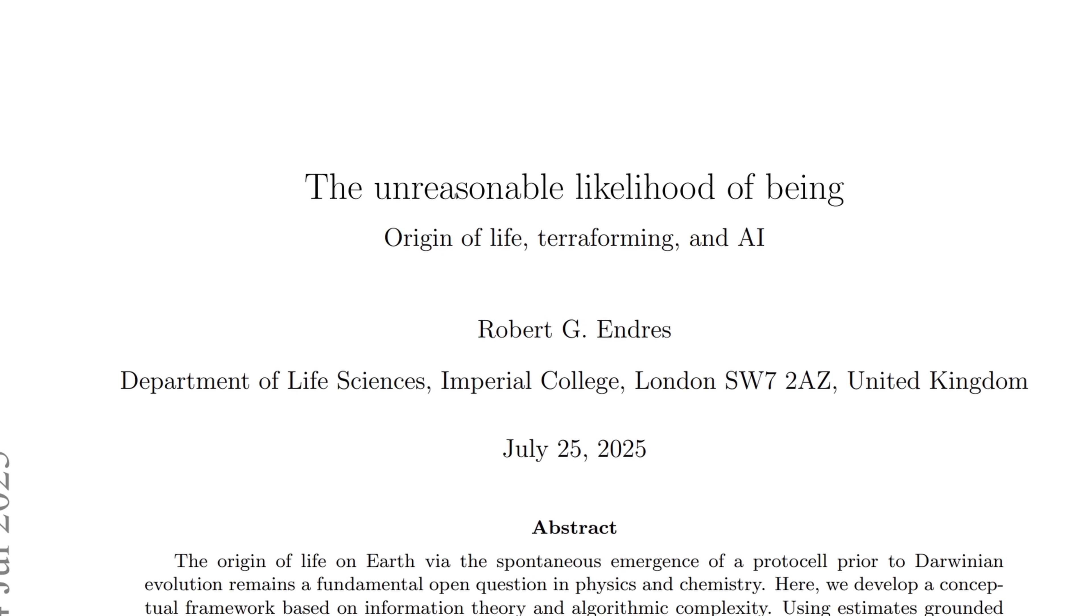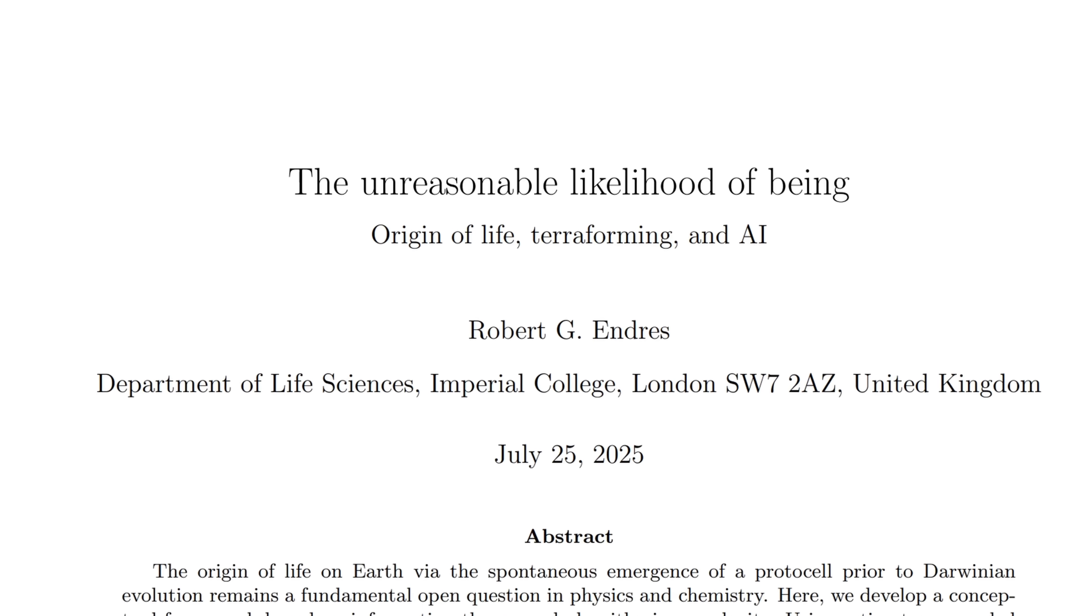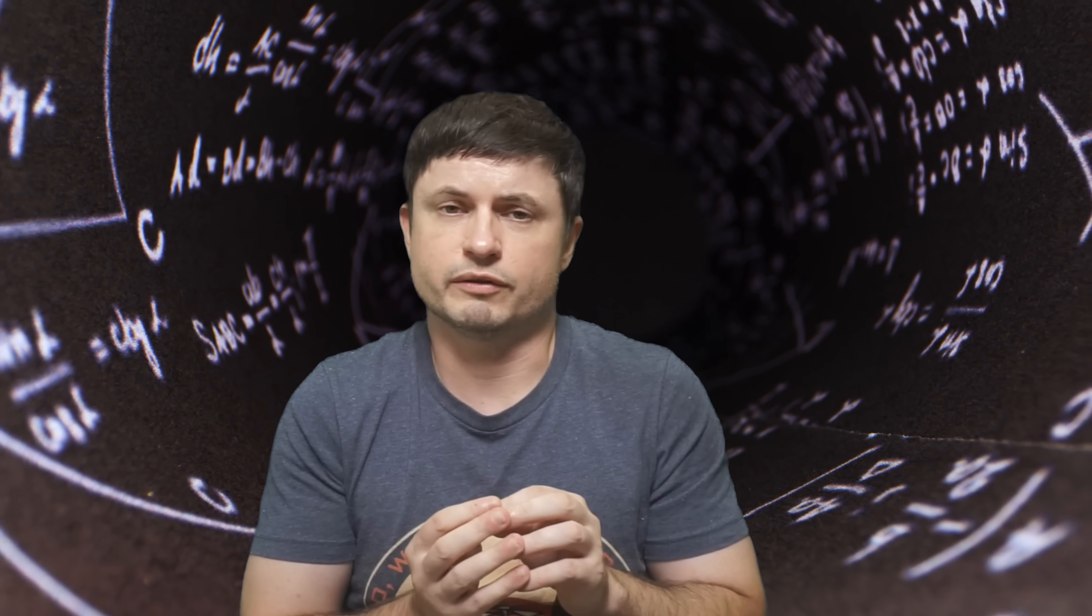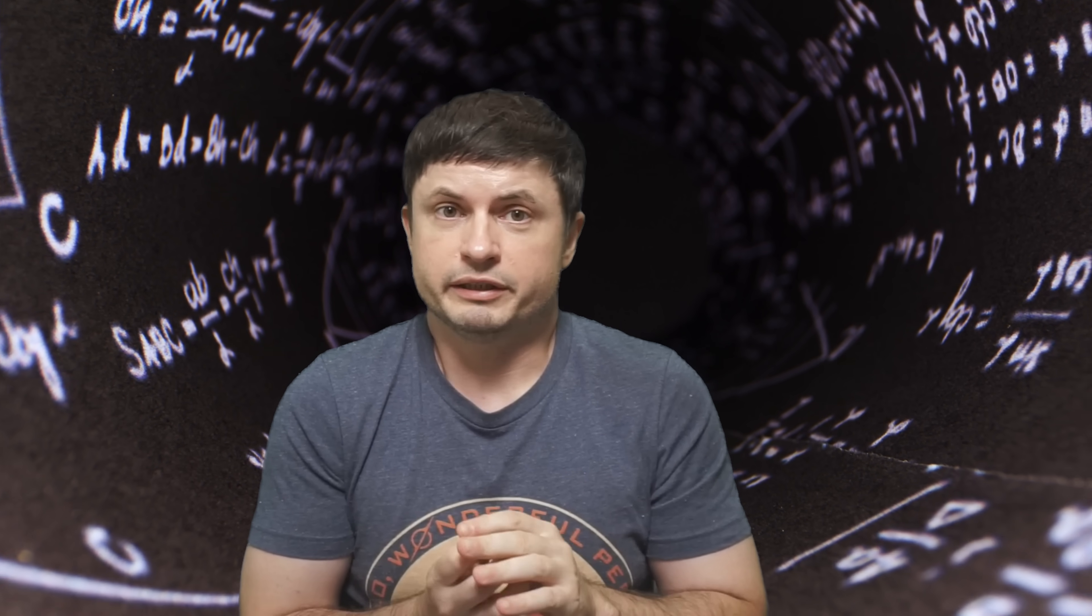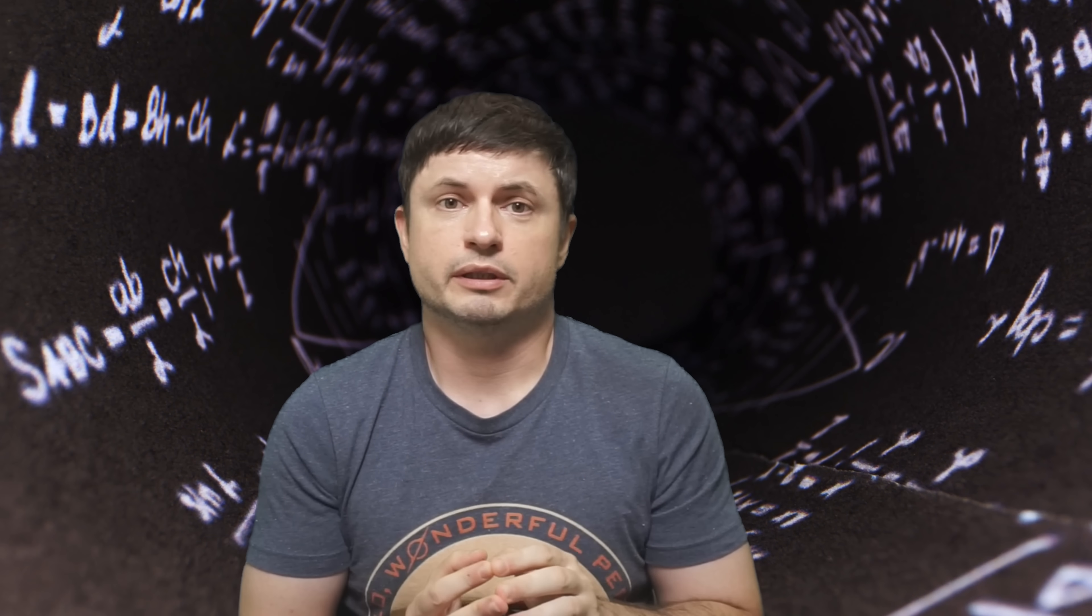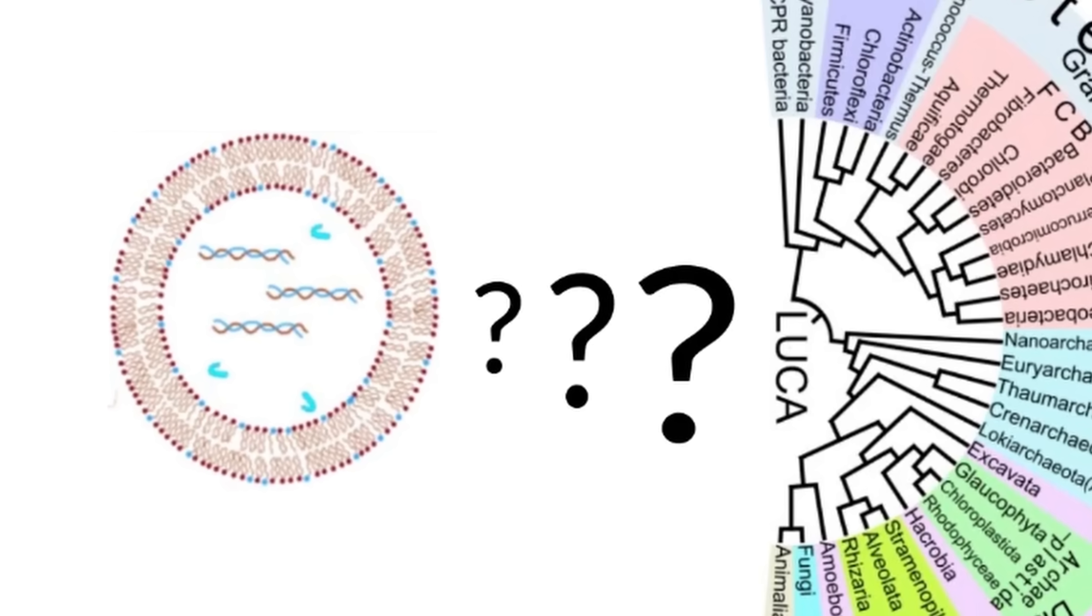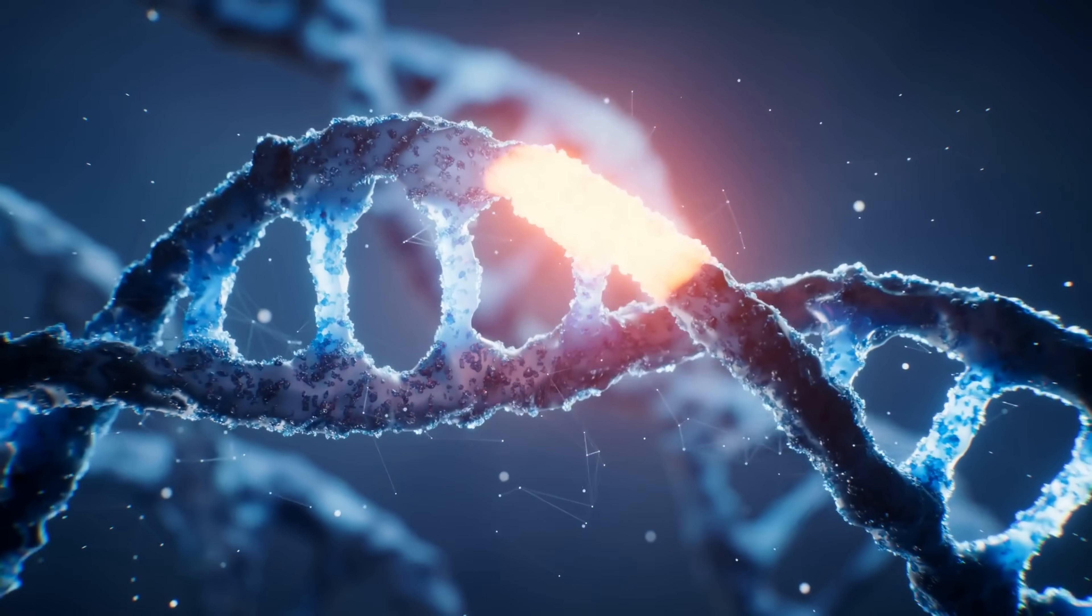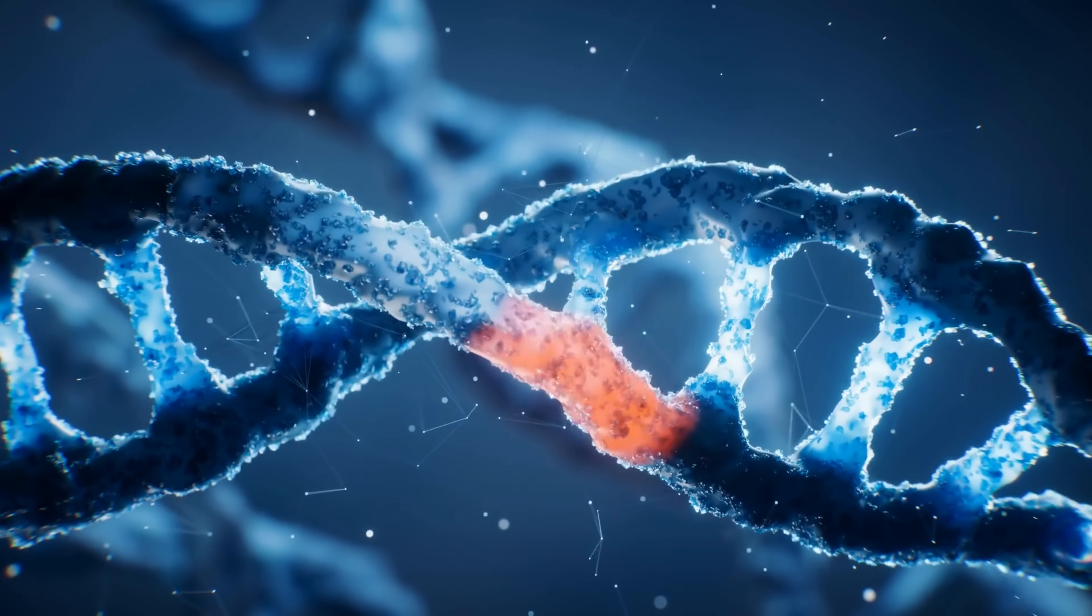And so in this video we're going to actually focus on this very recent study from the Department of Life Sciences at Imperial College London with the title, The Unreasonable Likelihood of Being. This is actually more of a mathematical exploration, but it does present us with a somewhat bizarre and somewhat difficult to answer question that once again can kind of be summarized as these question marks.